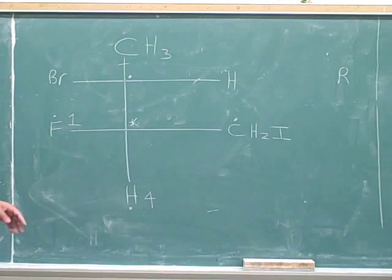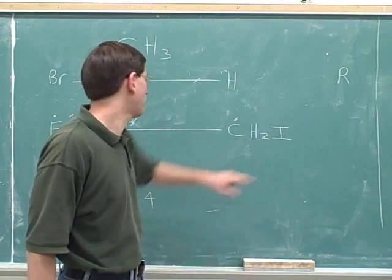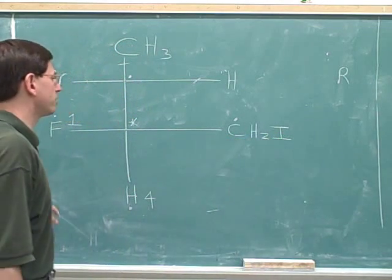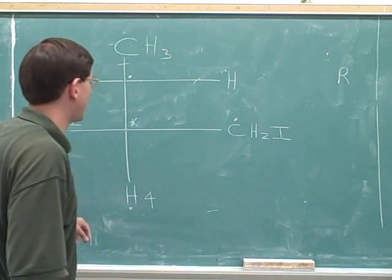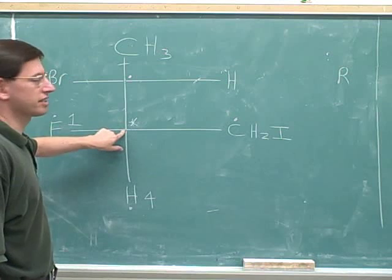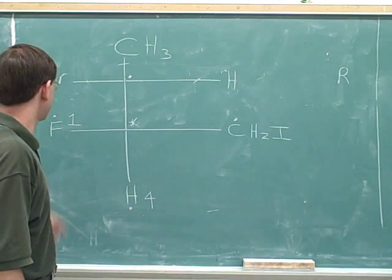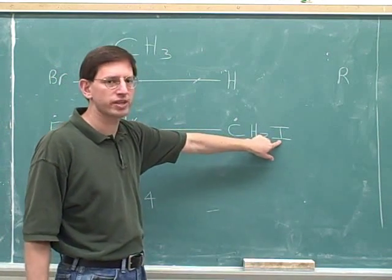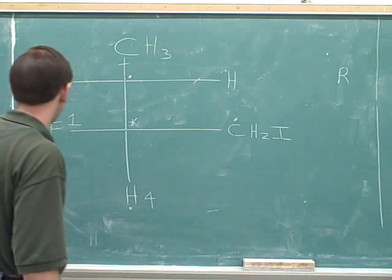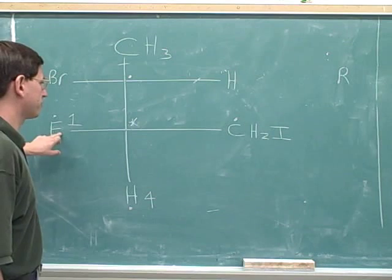Let me point out a mistake that would be easy to make. It would be easy to assume that this group gets the highest priority because it has this iodine over here. You might say iodine beats fluorine. But notice that this iodine hasn't even had a chance to come into play yet. We're just comparing the atoms with the dots that are directly connected to the stereocenter. When we compare those atoms, this fluorine on the left beats the carbon on the right, and this group never gets a chance to bring the iodine into play.